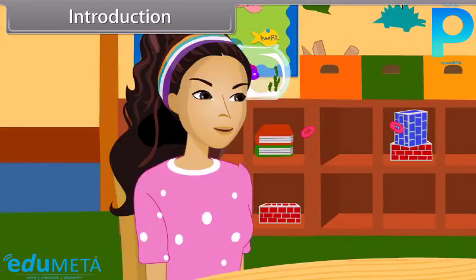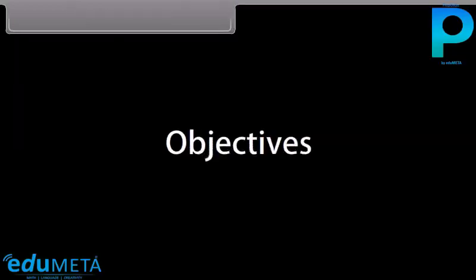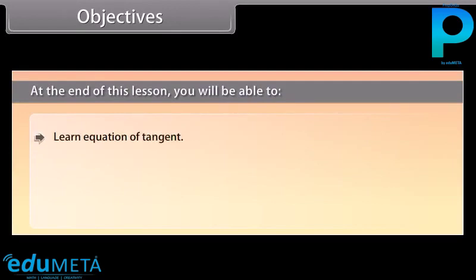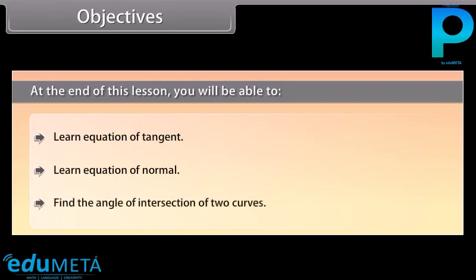Sheetal says: Oh yes, I remember. The objectives of this lesson are: to learn the equation of tangent, learn the equation of normal, and find the angle of intersection of two curves.